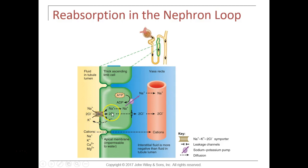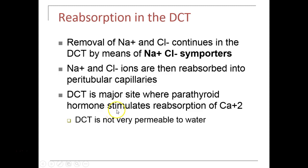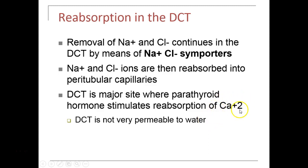In the distal convoluted tubule, sodium chloride simporters continue reabsorbing sodium and chloride, and there are also calcium transporters. The distal convoluted tubule is an important site where parathyroid hormone acts. Parathyroid hormone is released when blood calcium levels are low; it targets the kidney's distal convoluted tubule cells to cause more calcium to be reabsorbed, saving calcium from being lost in urine.